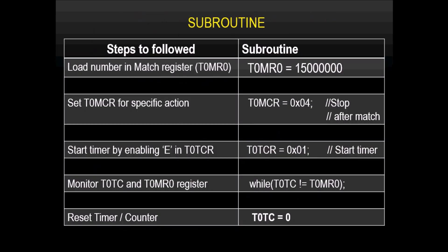Here are the steps for the subroutine: First, load T0MR0 with 15×10⁶. Next, load T0MCR with value 4 to specify the action on match. Then start the timer by loading T0TCR with 0x01. Compare T0TC and T0MR0 registers. Once a match occurs, load T0TC with 0 so the timer resets.